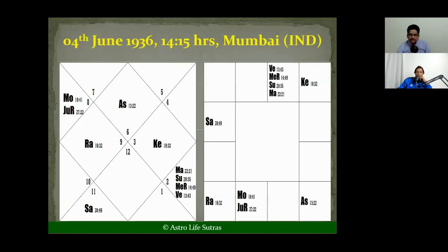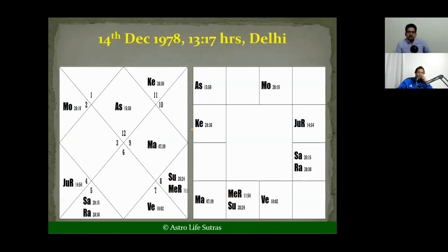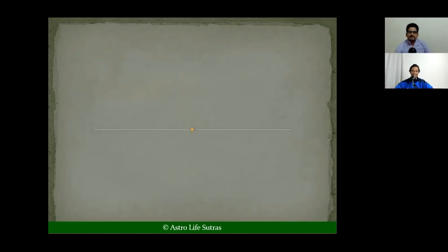One more question: in that chart, Mars was in the tenth house. Do you take the concept of Digbala into consideration for Vimshopak Bala? No — it depends only on friendship. Digbala is not considered. But being the ninth lord in the tenth house aspecting the tenth lord, this native is going to attain a very good professional position.